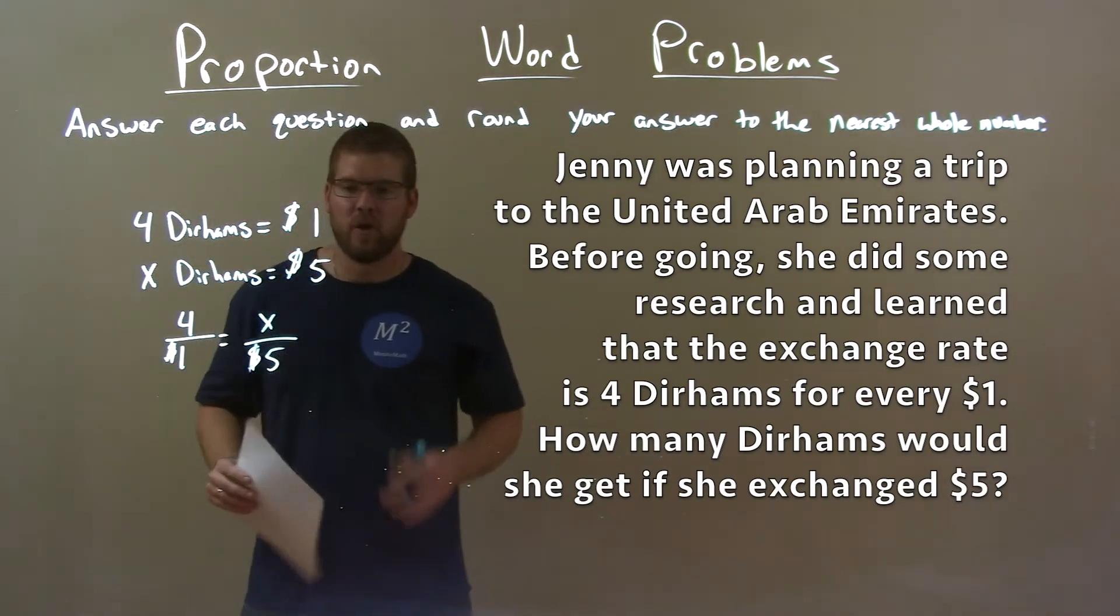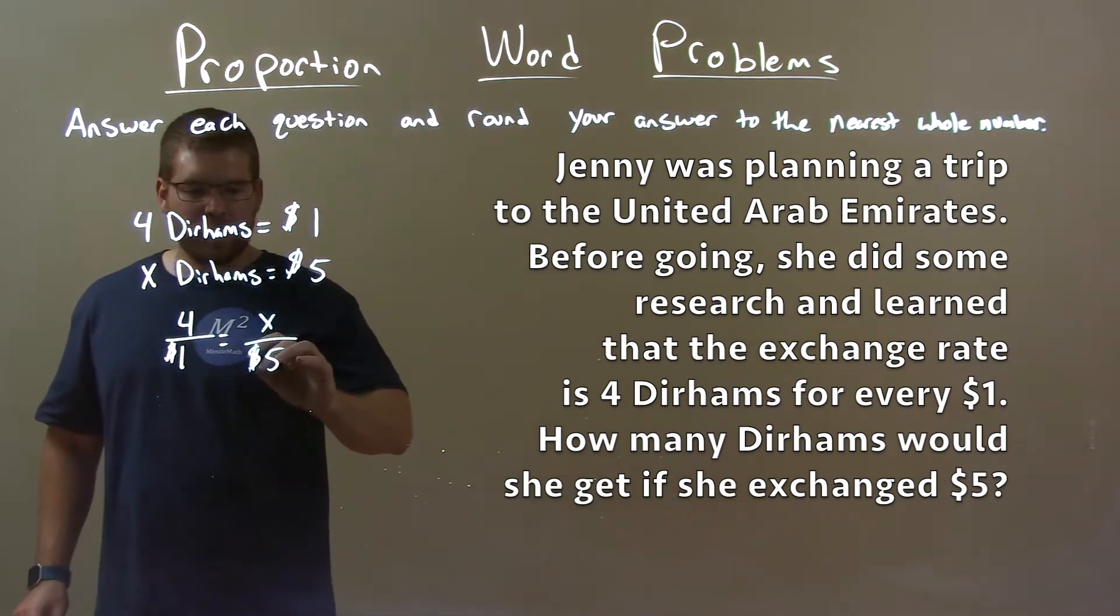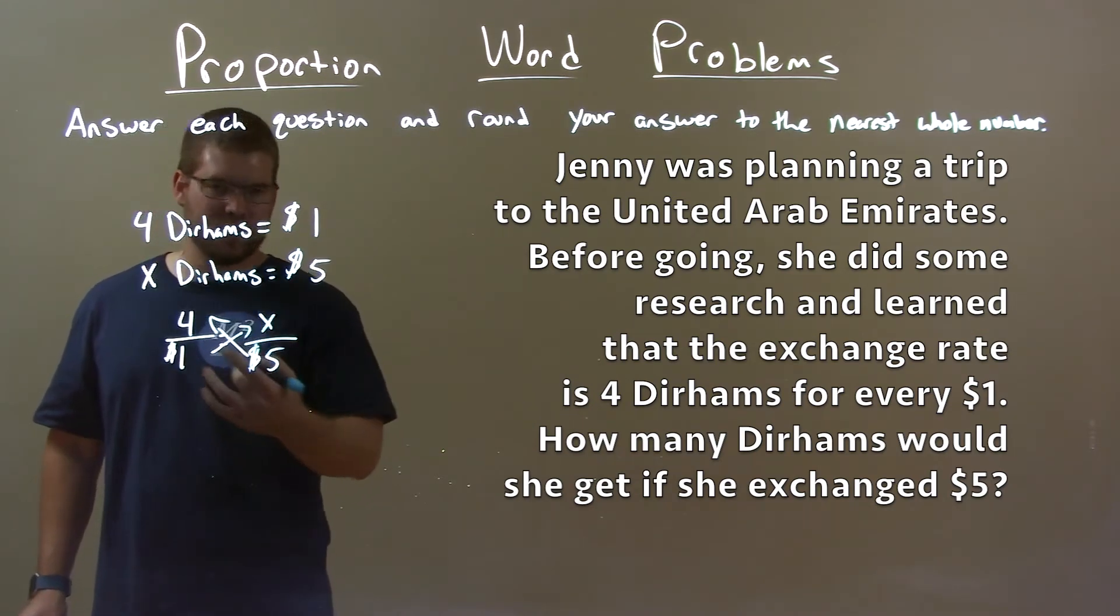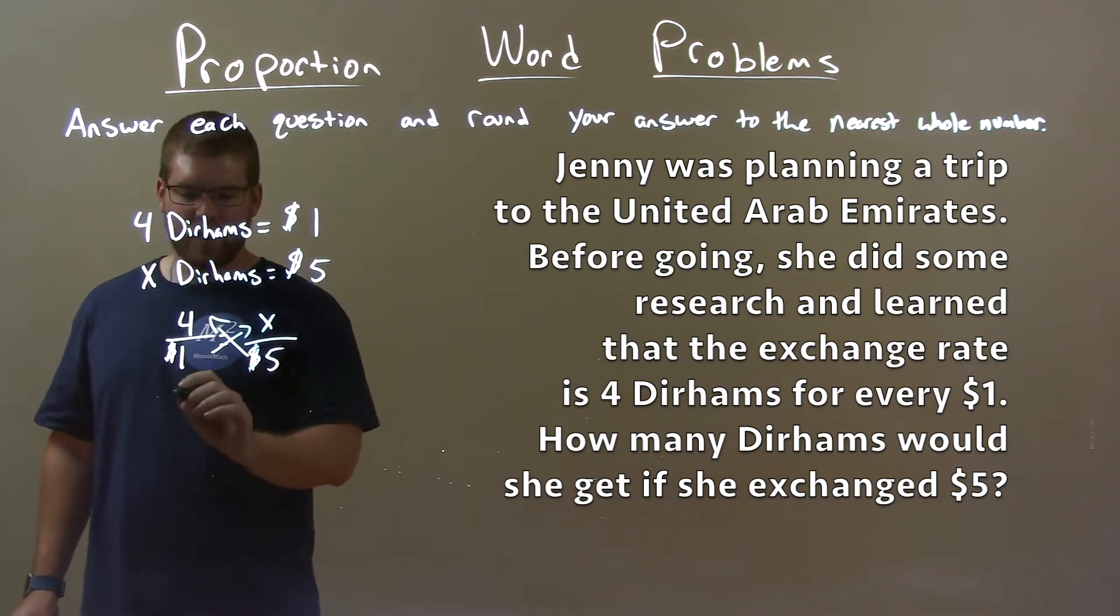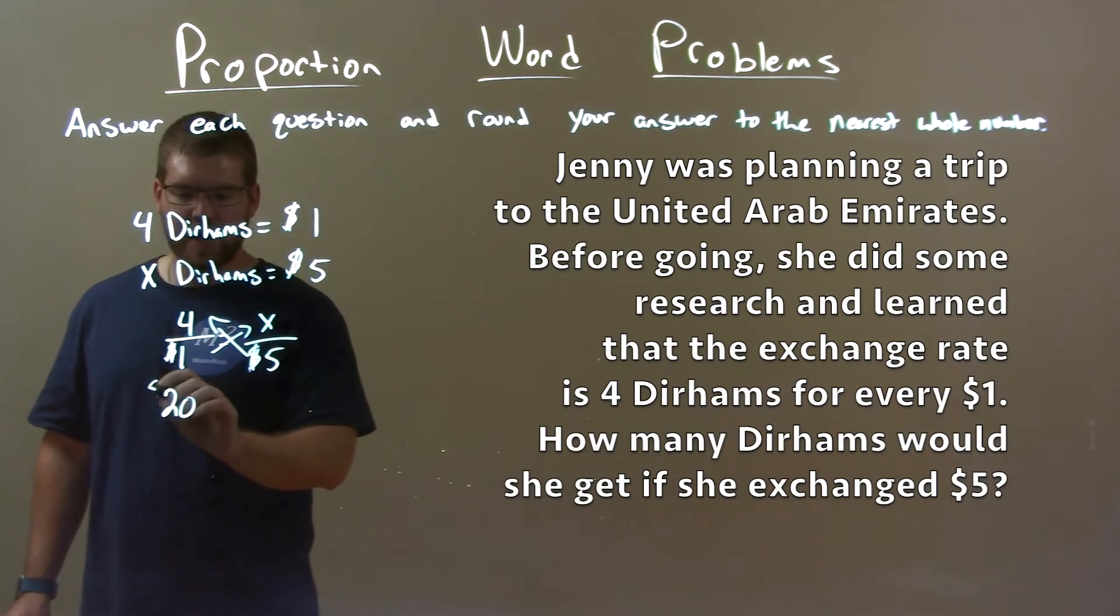And now let's solve for x. Well, I multiply both sides by the denominator, cross multiply. 4 times 5 is 20. Alright, $20 here.